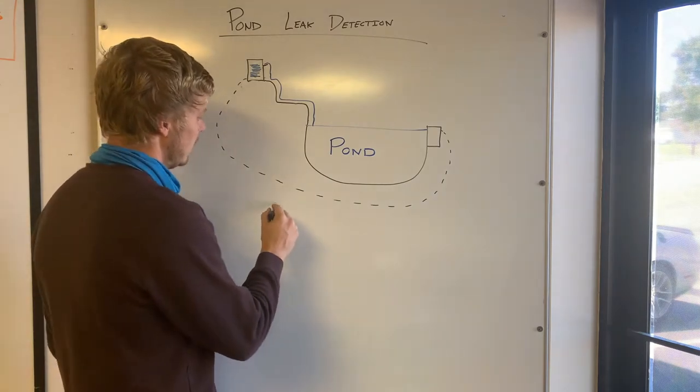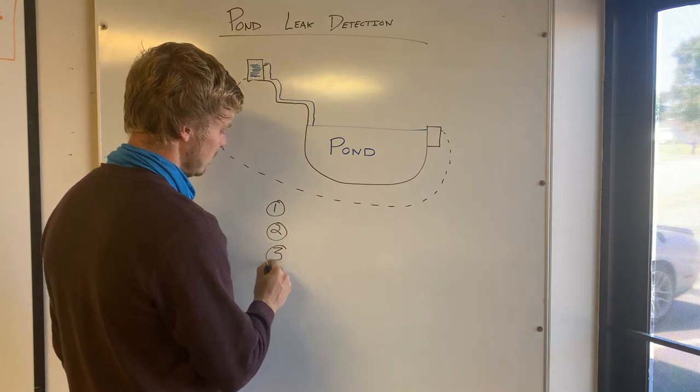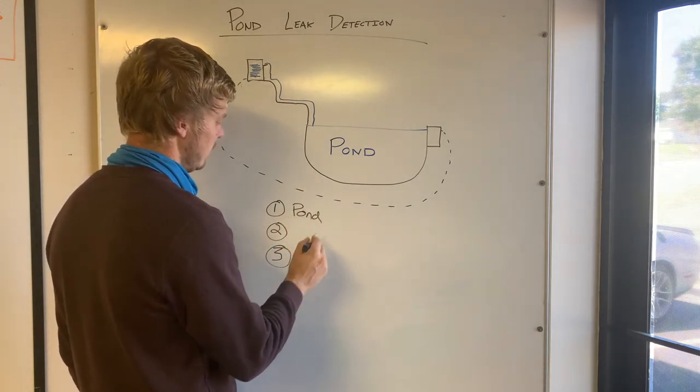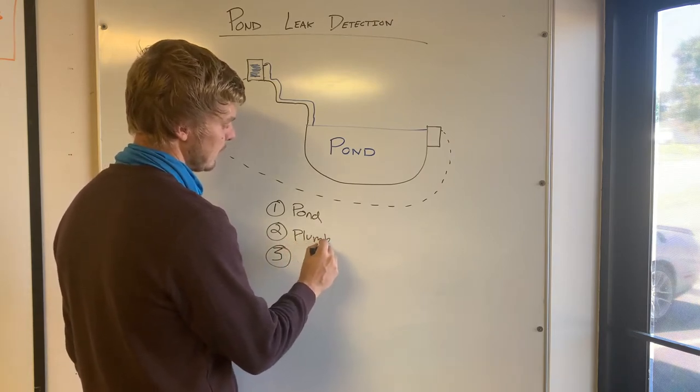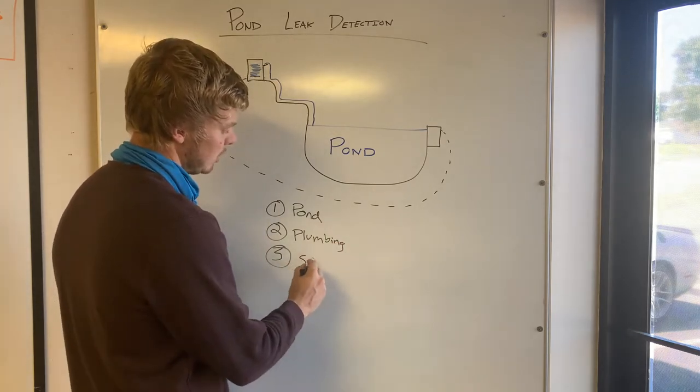So we're going to separate the feature into three main parts. The first part is the pond itself, the second part is the plumbing, and the third part is the stream.